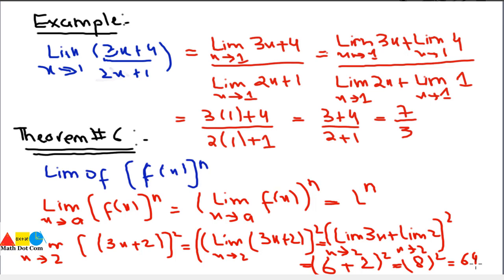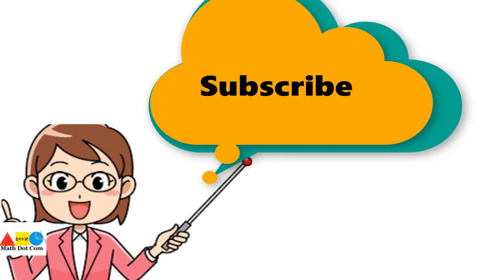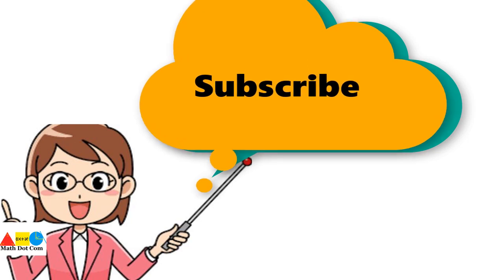That's all about the theorems on limits — the six theorems of limits. Basically, these theorems are just referring to the concept of substitution of values: whatever the value of x is in the limit, we just put that value into the function and evaluate. So we can also say the theorems basically refer to the substitution method. That's all from today's lecture. Thank you for watching. If you like this video, please don't forget to subscribe to our channel for more updates.